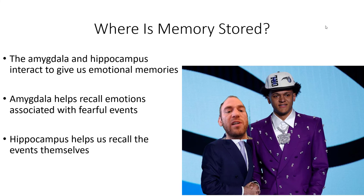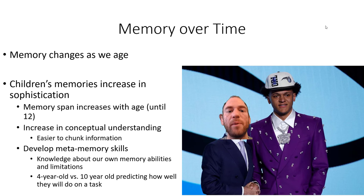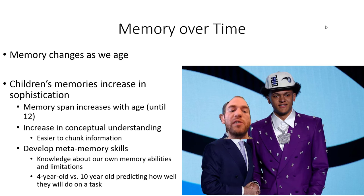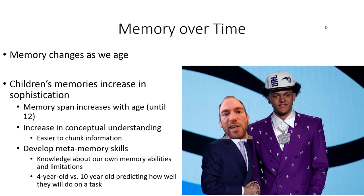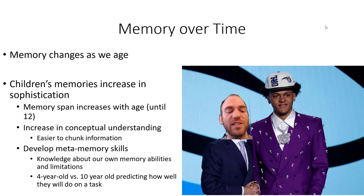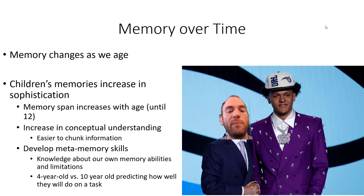Memory changes as we age. Children's memories increase in sophistication: memory span increases with age until about 12 years old, along with increases in conceptual understanding and ability to chunk information. We also develop better metamemory skills — knowledge about our own memory abilities and limitations. A 4-year-old asked how they'll do on a calculus exam will confidently say 'awesome,' while a 10-year-old recognizes they don't know calculus and will likely fail.